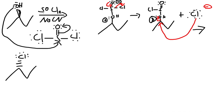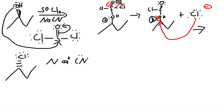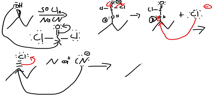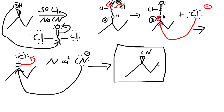Chlorine now has three lone pairs and we are done with the first reagent — we have made the alkyl chloride. Now let's use our second reagent, NaCN. Sodium is the spectator ion. The cyanide with a negative charge uses one of its lone pairs to do a backside attack on the carbon bearing the chlorine. The chlorine leaves as the leaving group — it's a one-step SN2 mechanism. Inversion happens again, giving us a wedge with CN. This is our final answer — only one product because it's SN2.